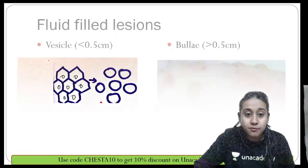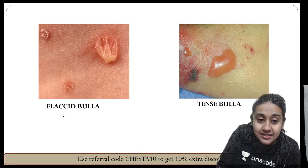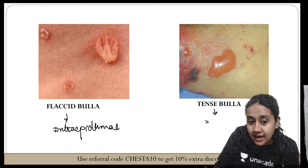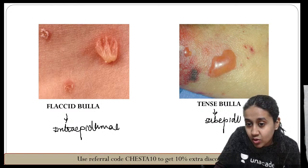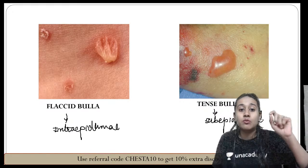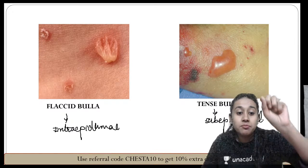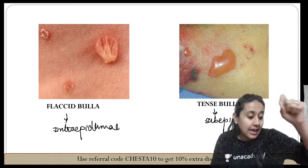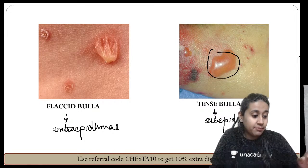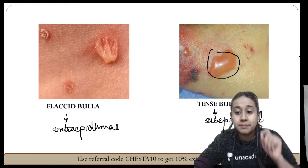There are two types of bullae: flaccid bullae and tense bullae. Flaccid bullae mean you have an intraepidermal acantholytic disorder, while tense bullae mean you have a subepidermal acantholytic disorder. If they give flaccid in the question, it means you are dealing with an intraepidermal acantholytic disorder; if tense, it is subepidermal.